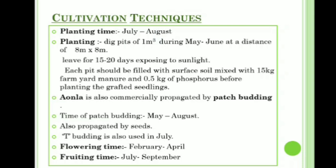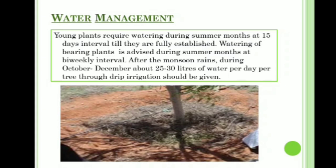Water management: young plants require watering during summer months at 15-day intervals until fully established. Watering of bearing plants is advised during summer months at bi-weekly intervals. After the monsoon rains, during October to December, about 250 liters of water per tree per day through drip irrigation should be given.